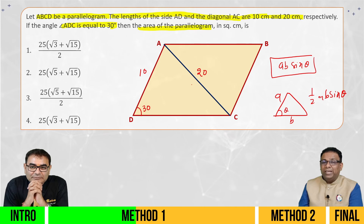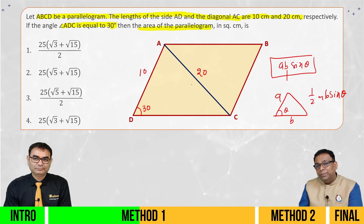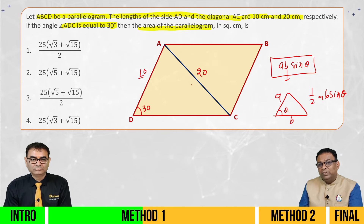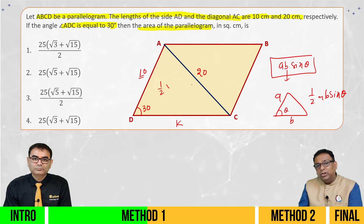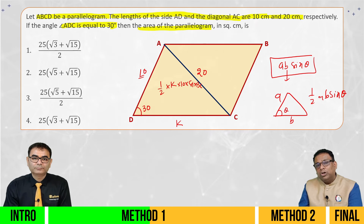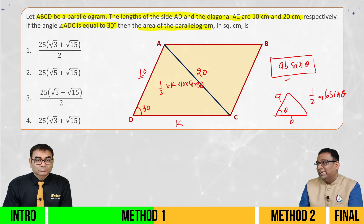So now I have to calculate the area — which is A into B into sine theta. Sin theta is important. I have to calculate side B. One side is 10. And the other side is DC — I don't know. Let's say this is equal to K. So what is the area of the parallelogram? And can I say the area of one triangle is half into K into 10 into sin 30? And I will multiply this by 2. But I have to calculate K — that is the challenge.